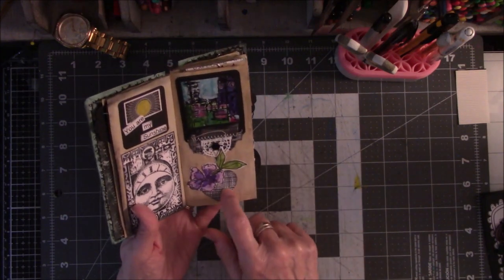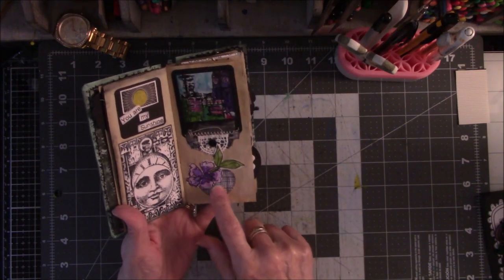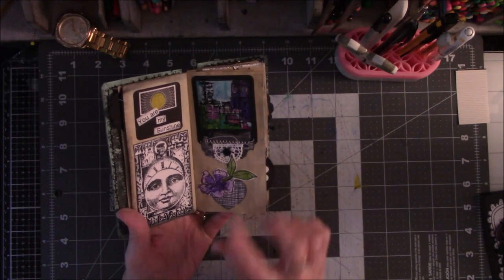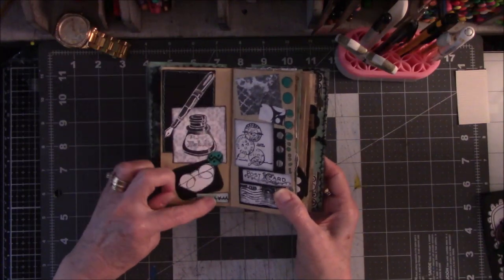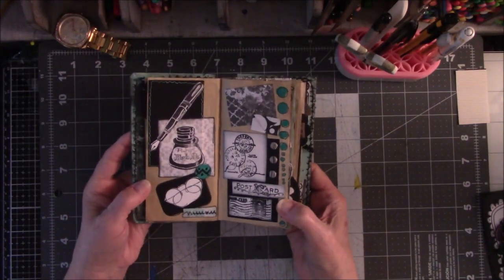This was cut out of scrapbook paper. I drew this and painted it. Painted it first, then drew over it. These are rubber stamps that I had that I like the set, so I wanted to put them on a whole page together.